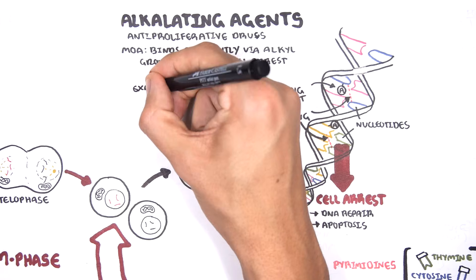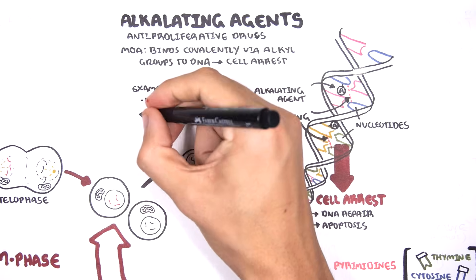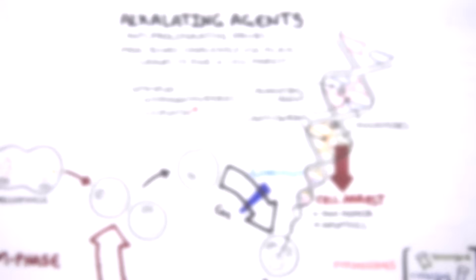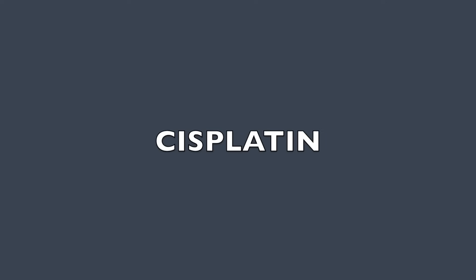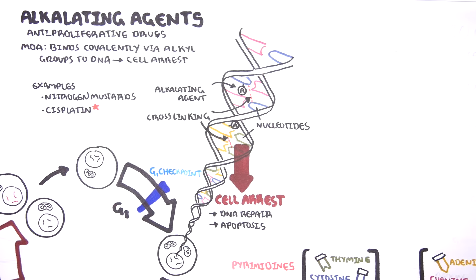Examples of alkylating agents include nitrogen mustards such as cyclophosphamide, and also cisplatin. Cisplatin is one of the most active anti-cancer drugs used on many types of cancers, but comes with many toxicities. It is actually its own class, but has a similar mechanism of action to alkylating agents and so is placed in this category.